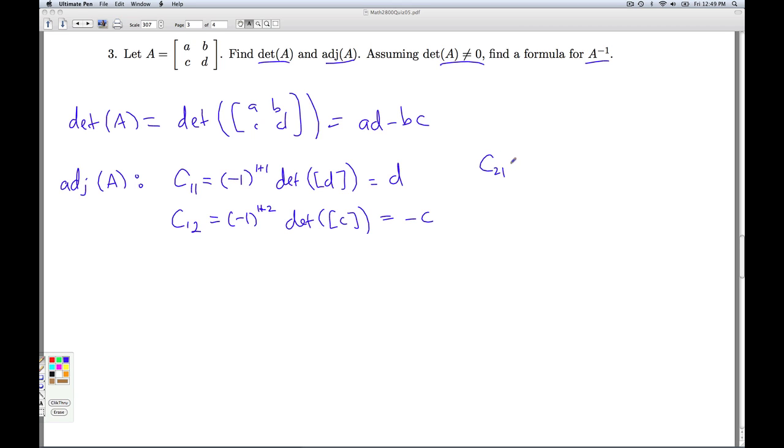C2,1 is negative 1 to the 2 plus 1 times the determinant of what you get by deleting the second row, first column, which is B. So I get the opposite of B.